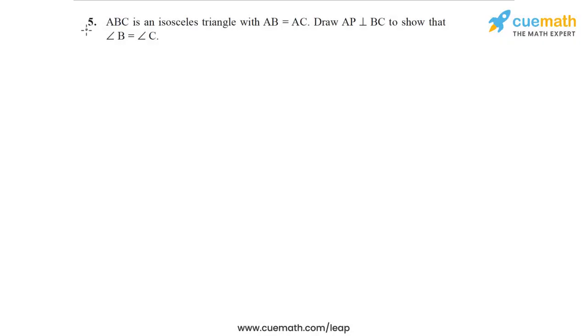Here is the problem statement of question 5 of this exercise. ABC is an isosceles triangle with AB equal to AC. Draw AP perpendicular to BC to show that angle B is equal to angle C. Let's draw a figure.